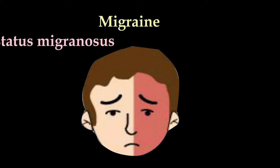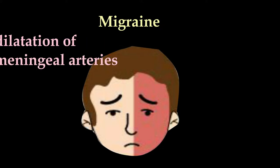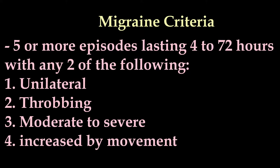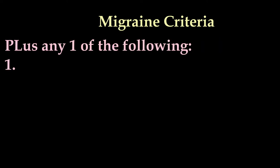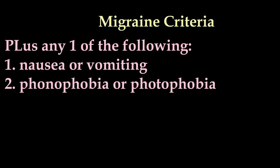Migraine is thought to arise from the dilatation of blood vessels on the covering of the brain, although there are no studies to prove exactly what causes it. The criteria for migraine without aura include 5 or more episodes of headache lasting 4 to 72 hours, with any two of the following: unilateral, throbbing, moderate to severe, or increased by movement; plus any one of the following: nausea or vomiting, phonophobia or photophobia.